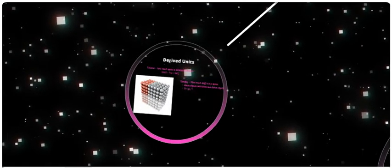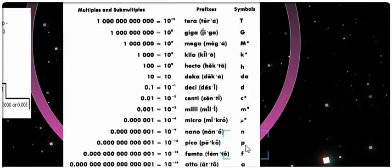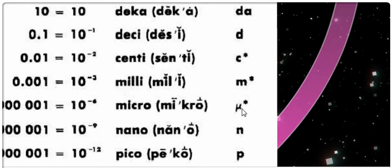The last thing I need to talk about that people usually get wrong is the unit symbol for micro is the Greek letter mu, which looks like a U, but with a tail in the front. That's a mu.